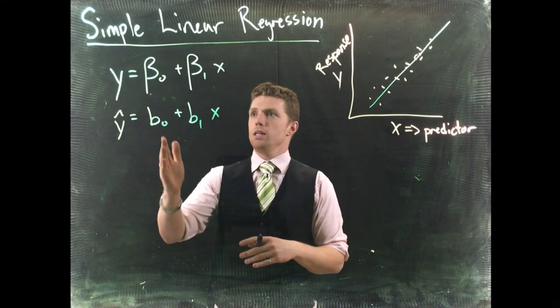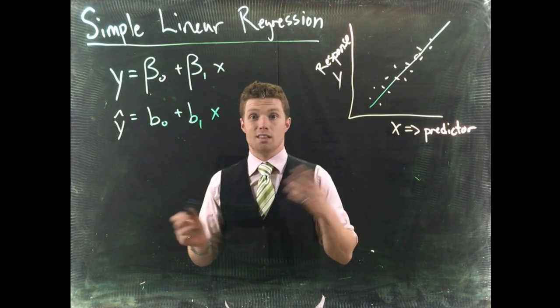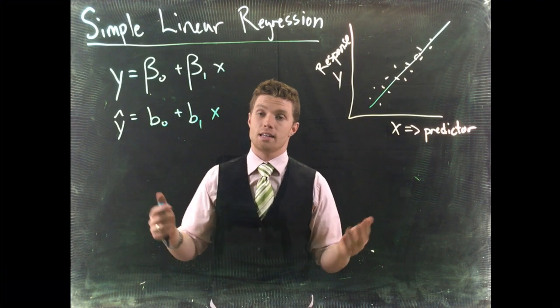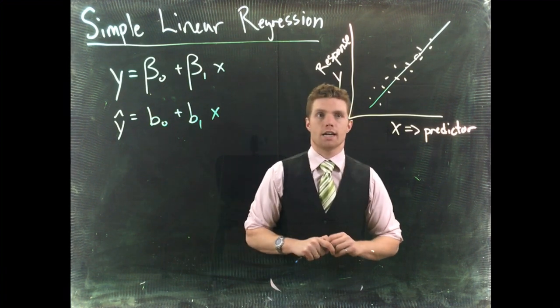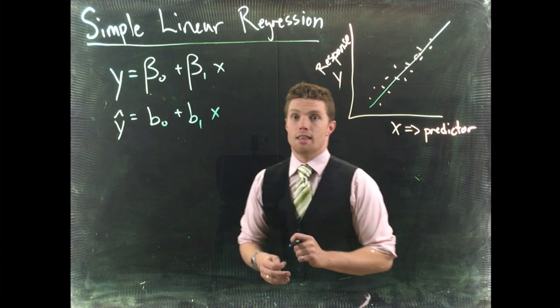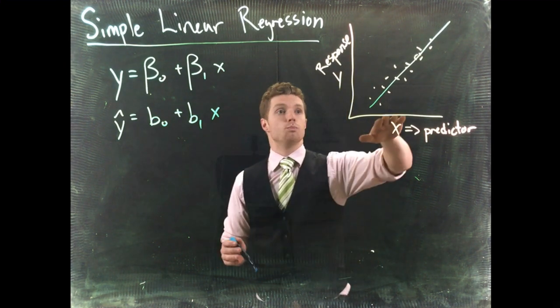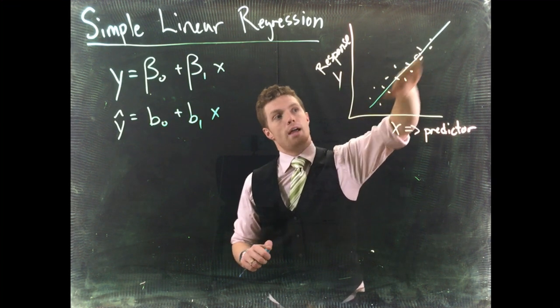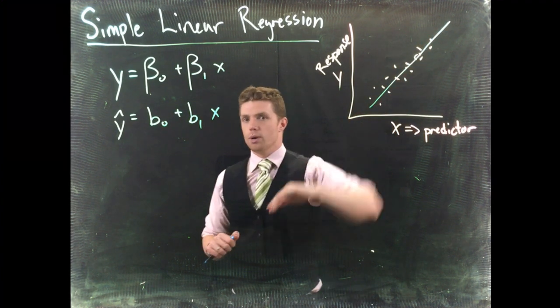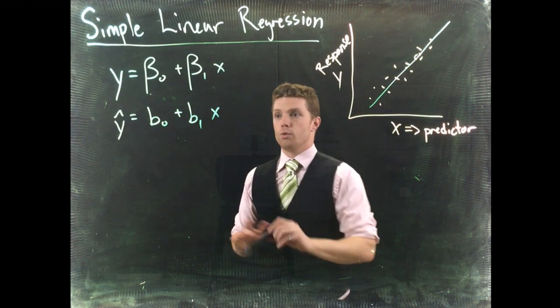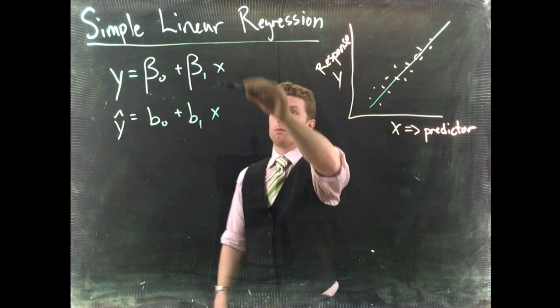So ultimately, we really don't care about the intercept most of the time. Our intercept doesn't even make sense a lot of times. It's so far outside of the range for the data that we have collected that it's kind of meaningless. Really, all the y-intercept is there to do is to position the line so that the line goes through the midpoint of all of the data. We're really interested in our beta 1 term.